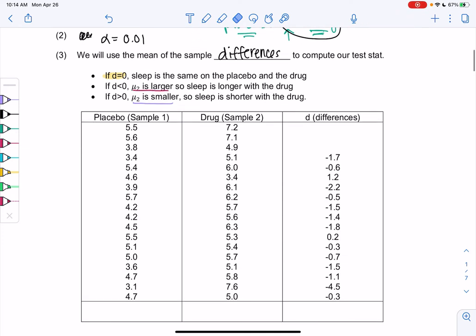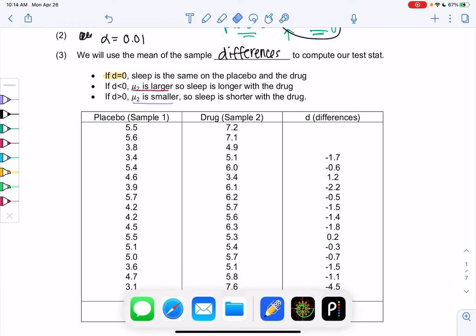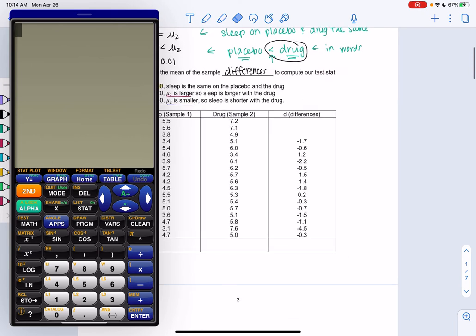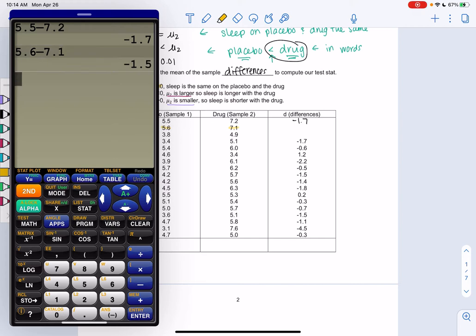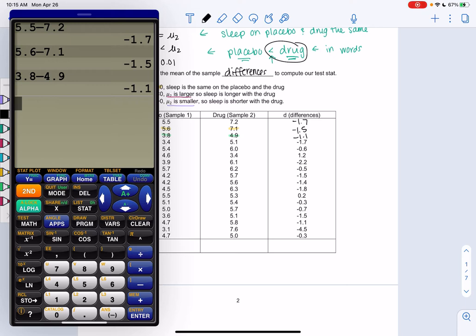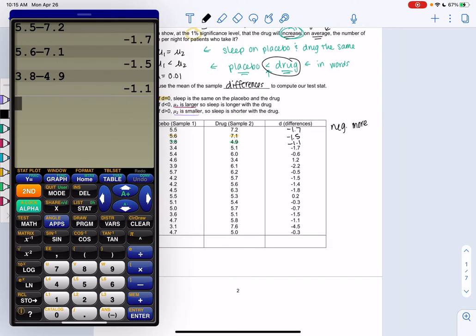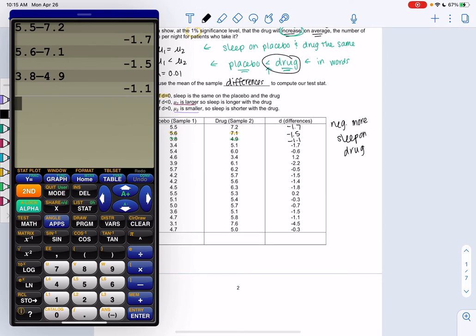We're going to calculate differences. To save some time, I already did some for you. To do differences I'm taking each value. I'm taking the first one, 5.5 minus 7.2, and we get a difference of negative 1.7. That negative is important. Then we do the next row, 5.6 minus 7.1, negative 1.5. For the third one, 3.8 minus 4.9. Remember negative means they're sleeping more on the drug. That's why most of these are negative. Positive means less sleep on drug.